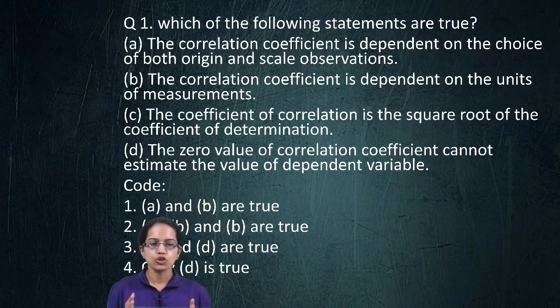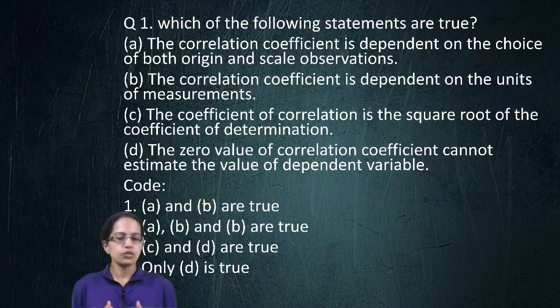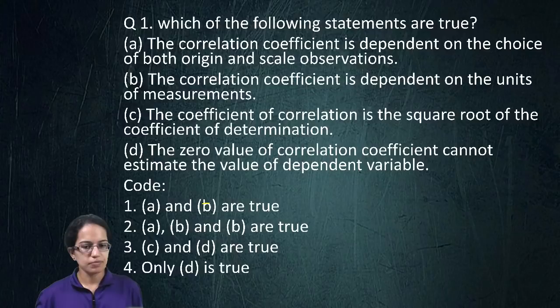Welcome. We will start with our NDA Net Geography — the questions which are to be addressed for the grievances. I have received some of those. The first question talks about the correlation coefficient.